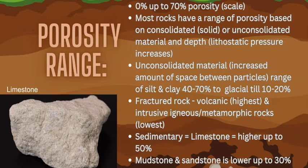Another range to consider is whether the rock is unconsolidated — loose materials packed together — or consolidated, meaning solid. A solid rock will generally have less porosity than an unconsolidated rock like a conglomerate or breccia. Then there is fractured versus non-fractured: if a rock is broken or fractured due to tectonics, mass wasting, or erosion, a fractured rock will generally have a higher porosity than a non-fractured rock.